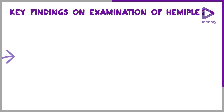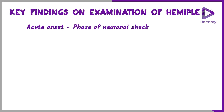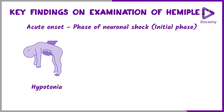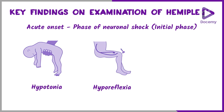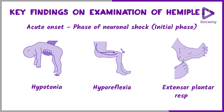The main findings on examination in a case of hemiplegia: if it is acute onset, the initial phase will be a phase of neuronal shock, where the patient will have hypotonia, hyporeflexia, and extensor plantar response. In UMN lesions we actually expect the reverse — hypertonia and hyperreflexia — but in the neuronal shock phase, it is hypotonia and hyporeflexia.